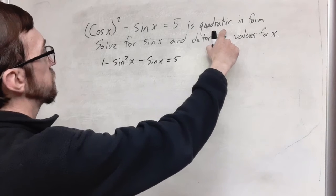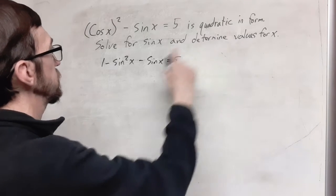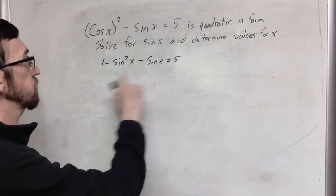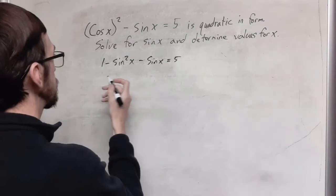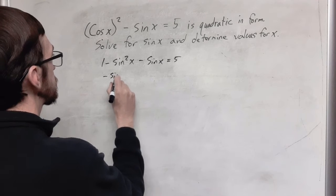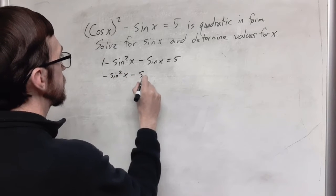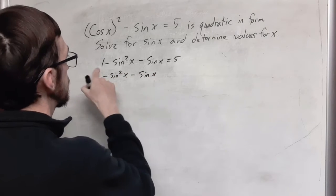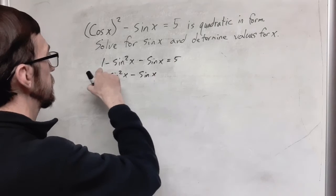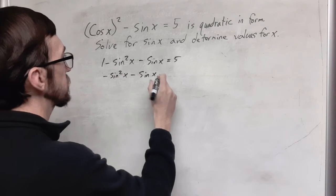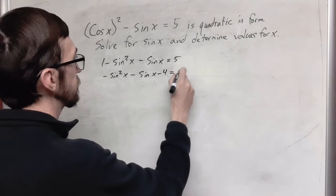Now, quadratic form is important here. That was a clue. We have a square, we have a single term, we need to get a constant, and we need this equal to 0. So we're just going to do a little bit of algebraic manipulation here. I'm bringing the 5 over to the left-hand side of the equation, and I'm going to add it with the 1 term.